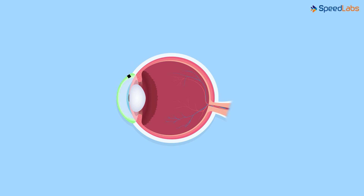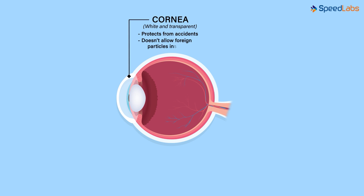The outer layer of the eye is called the cornea. It's white in colour and transparent — meaning it allows light to pass through it. It acts like a tough front wall of the eye. It protects the interior of the eye from accidents and also does not allow foreign particles to enter the eye.